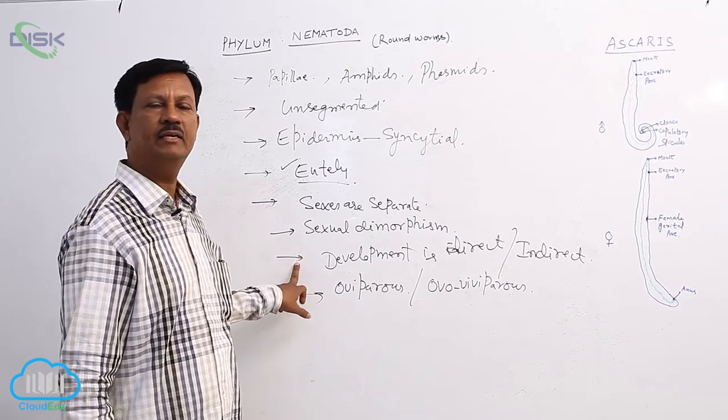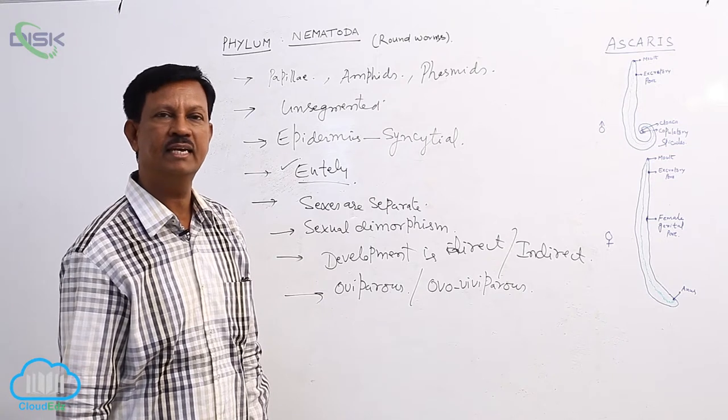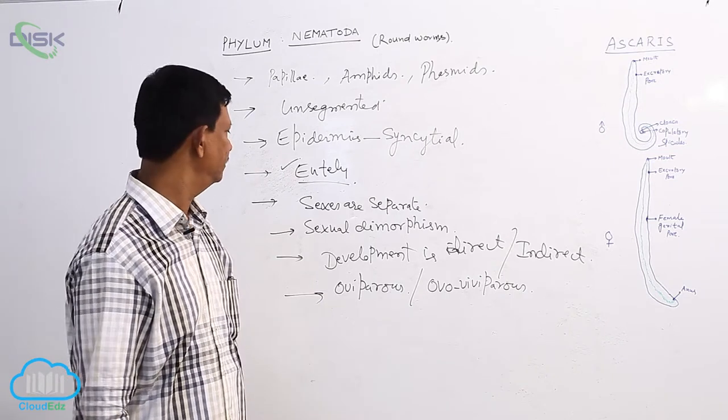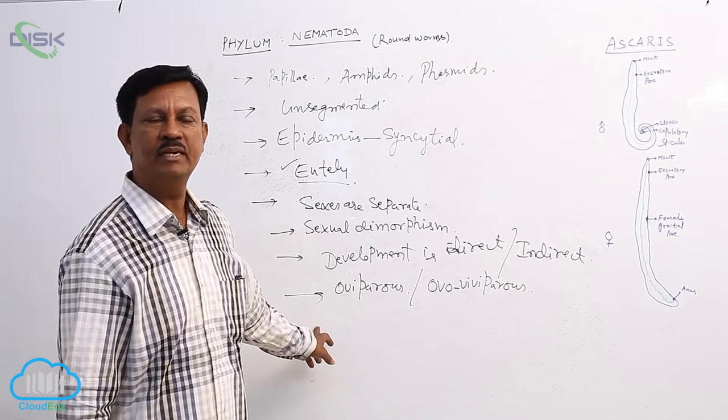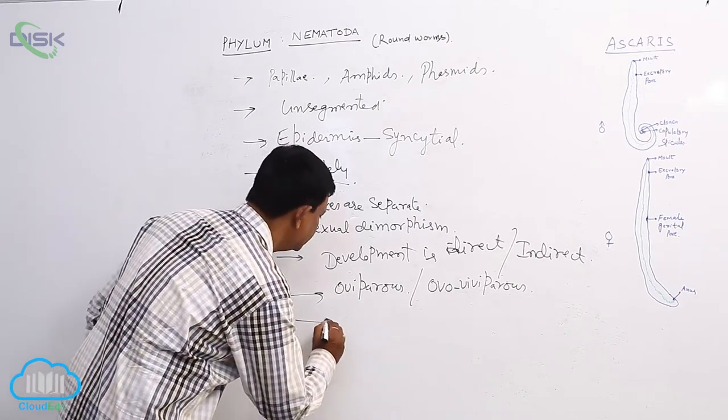Sexes are separate - both male and female animals are separate. And sexual dimorphism is well marked. Externally we can recognize which is the male animal, which is the female animal. And oviparous or viviparous animals. And internal fertilization takes place here.